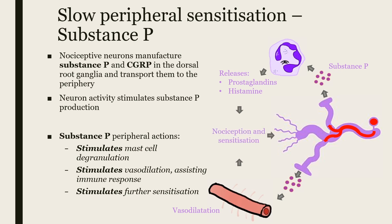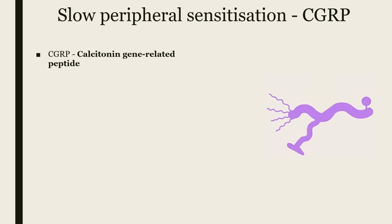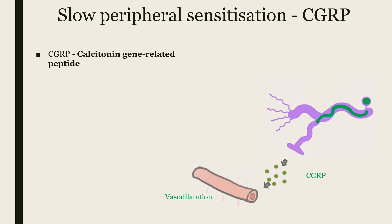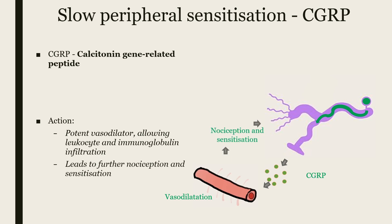As well as substance P, CGRP — calcitonin gene-related peptide — is also produced by the cell body of peripheral nociceptive fibres and also travels to the periphery. In the periphery, it acts as a potent vasodilator. This allows the infiltration of leukocytes and immunoglobulins to the site of the injury, which, as mentioned earlier, leads to further nociception and sensitisation of the nociceptive fibre.